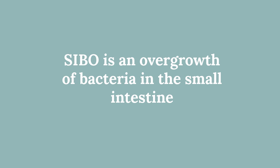SIBO is an overgrowth of bacteria in the small intestine. Originally, we thought that the small intestine was sterile. As we're learning about different areas of the body, the small intestine does have a healthy population of microbes, and it's only when those microbes are allowed to overgrow that SIBO develops and we have these problems that we're going to be talking about shortly.